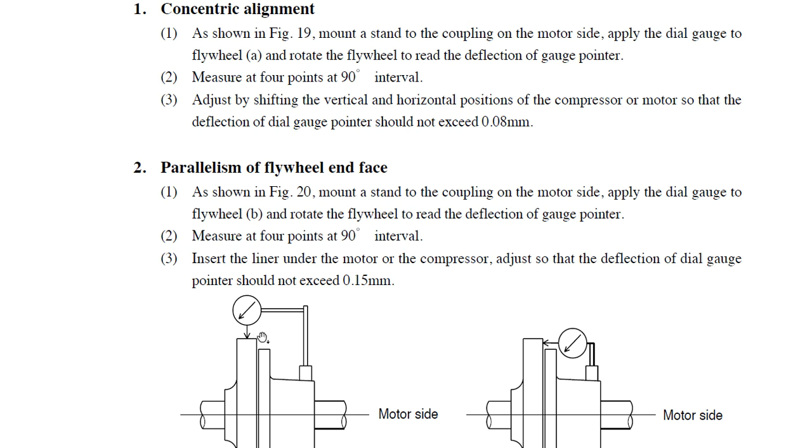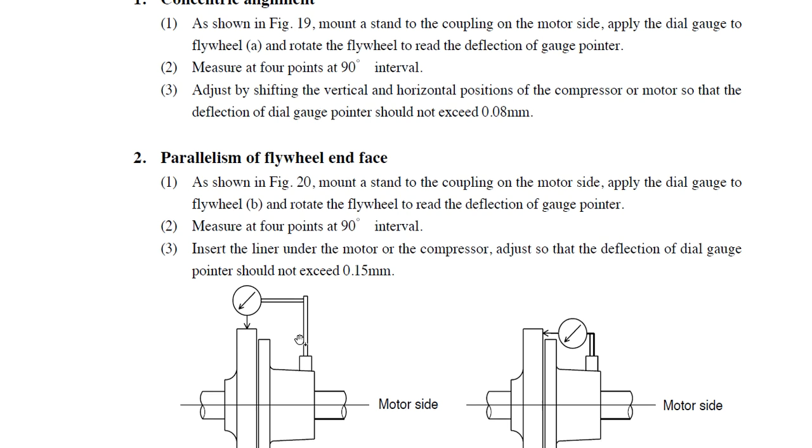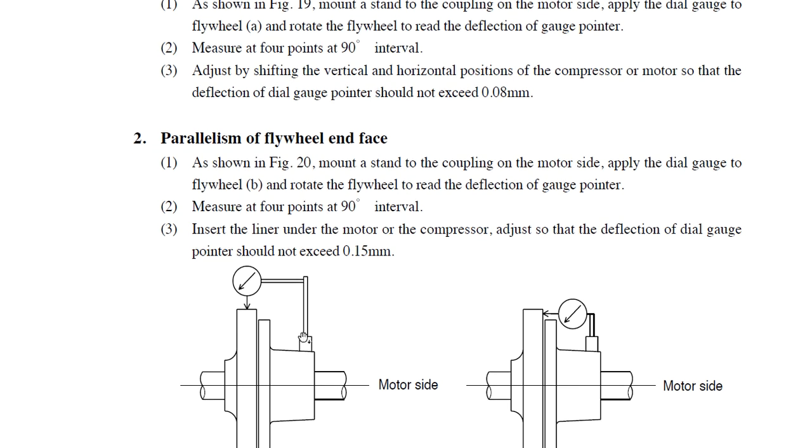As we rotate the flywheel, we will read the deflection gauge pointer. Measurements should be taken at four points with 90-degree intervals. Adjust by shifting the vertical and horizontal position of the compressor and rotor so that the deflection of the dial gauge pointer should not exceed 0.08 millimeters.